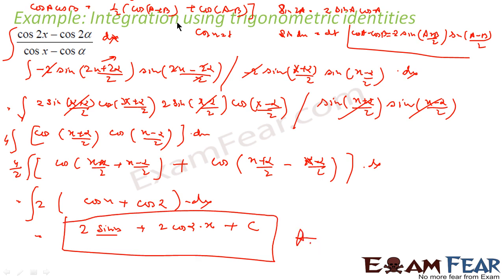So what I have done here: I had this complex integrand and I converted it into a simple integrand using trigonometric formulas. I converted it into cos A·cos B form, and from cos A·cos B I converted it into ½(cos(A+B) + cos(A-B)) form, which is very easy to integrate.